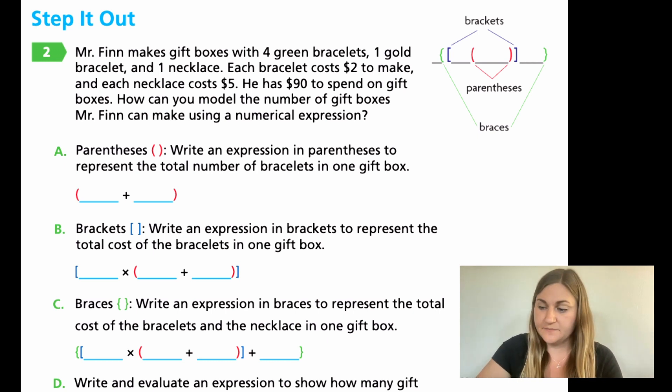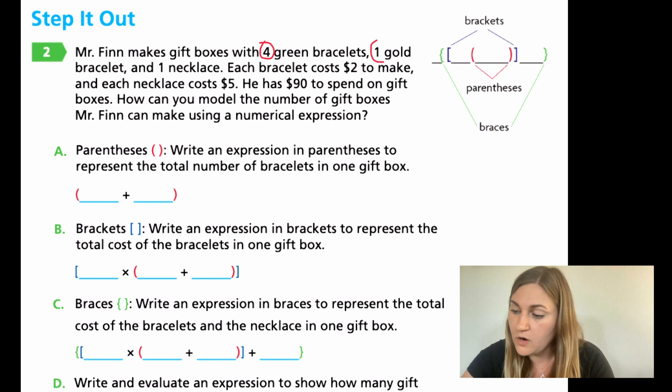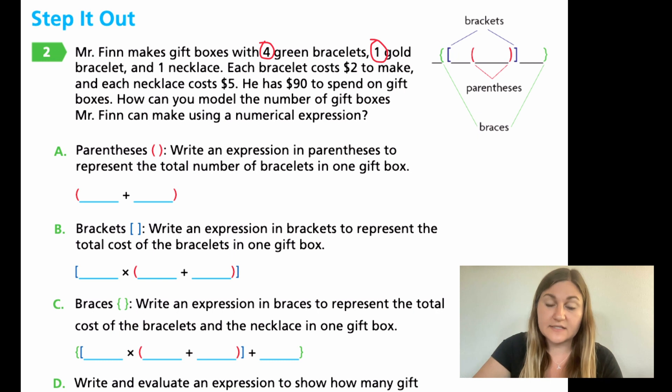I'm going to work through this all with you since this is a new topic. So A says parentheses. Write an expression in parentheses to represent the total number of bracelets in one box. I need to go back up to the top, and I'm going to mark up this problem with some different colors and try to figure out what's going on in those parentheses. Because the parentheses is in red, I'm going to use red to mark it up. Mr. Finn makes gift boxes with four green bracelets and one gold bracelet. The colors don't really matter for this problem, but I know that there's four green and one gold bracelet, and then there's one necklace, and that'll come later. If I have four green and one gold, that's going to be 4 plus 1. That's part one of our problem.